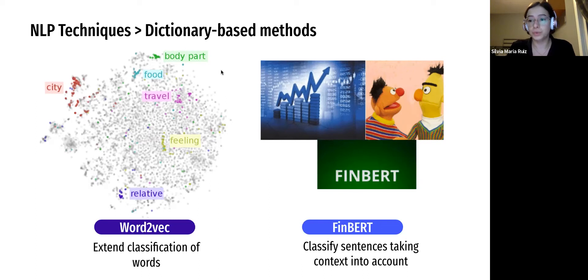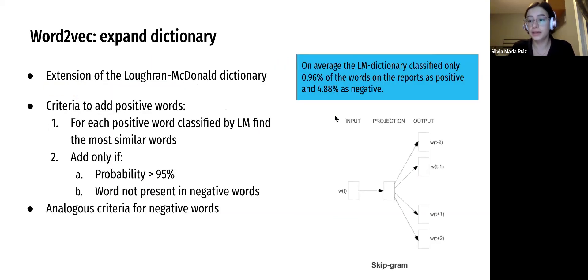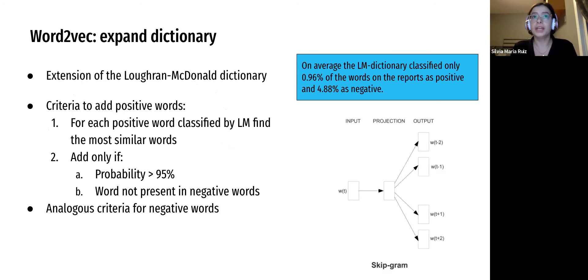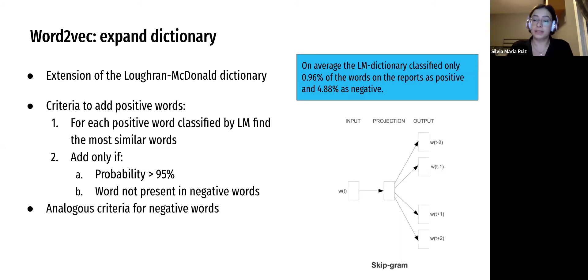That's where we decided to use two NLP techniques: the Word2Vec model, which we used to expand the LM dictionary, and FinBERT, which we used to understand context. We took all the words classified as positive and negative found in the reports by Loughran-McDonald, then trained a skip-gram model on each report. We then found the most similar words and added them to the dictionary if the probability of being most similar was greater than 95% and if that word was not already present in the negative words. We did the same for the negative words, and that way we were able to expand the LM dictionary.